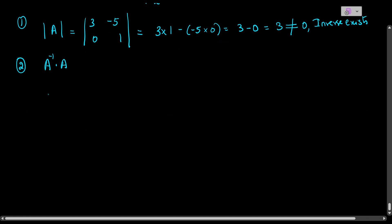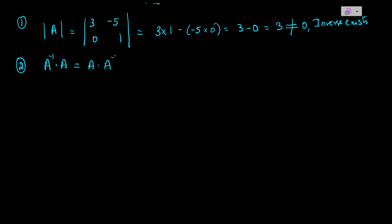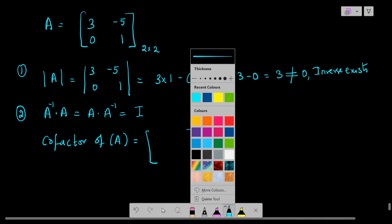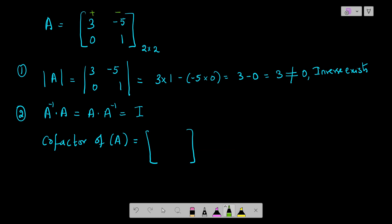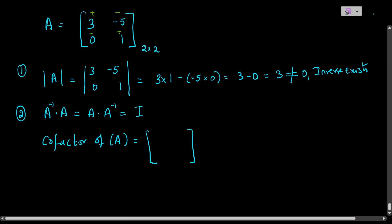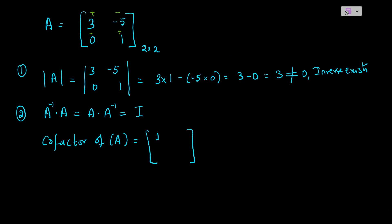Now let us find A inverse. First, find the cofactor matrix. The sign pattern for a 2×2 matrix is positive, negative, negative, positive. Avoiding the row and column of element 3, we get cofactor 1 (positive). Avoiding the row and column of −5, we get 0, so that cofactor is 0.